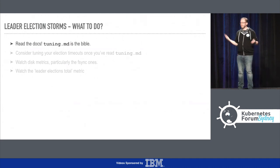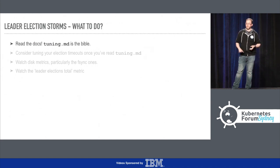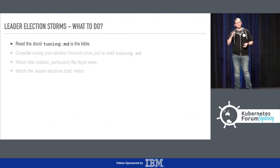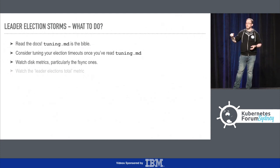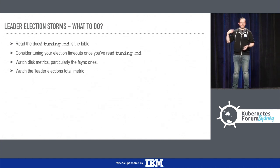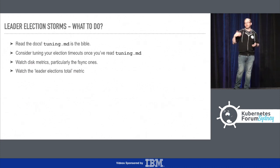So what to do about it? I know this sounds like the thing that everybody says, but in this case the tuning.md documentation inside the etcd repo is a complete goldmine for all of these things. It has exactly what each setting does, exactly how it works, and some tips on how you should tune it - like if you're doing this, increase this value; if you're doing this, decrease this value. Read that, then tune your timeouts to make sure it meets the performance characteristics of your load. Watch the disk metrics, particularly how long it's taking to fsync when you're doing the flush to disk. And lastly, watch the leader elections total metric. If that is going up a lot, you have this problem but it hasn't been visible to you yet.